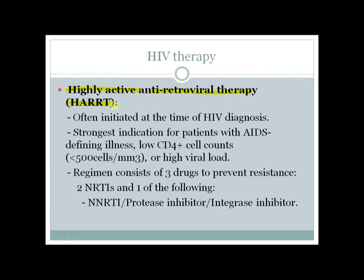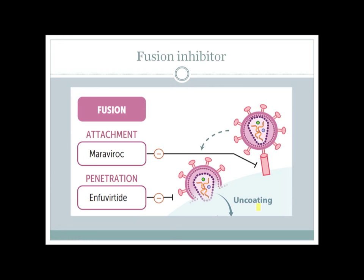HIV therapy is also known as highly active antiretroviral therapy, or HAART. This is often initiated at the time of HIV diagnosis, but the best indication is in a patient with an AIDS-defining illness, or a CD4 positive cell count less than 500 cells per cubic millimeter, or if there is a high viral load. The regimen of HAART consists of three drugs to prevent resistance: two of them are NRTIs (nucleoside reverse transcriptase inhibitors) and one of the following — an NNRTI, a protease inhibitor, or an integrase inhibitor.